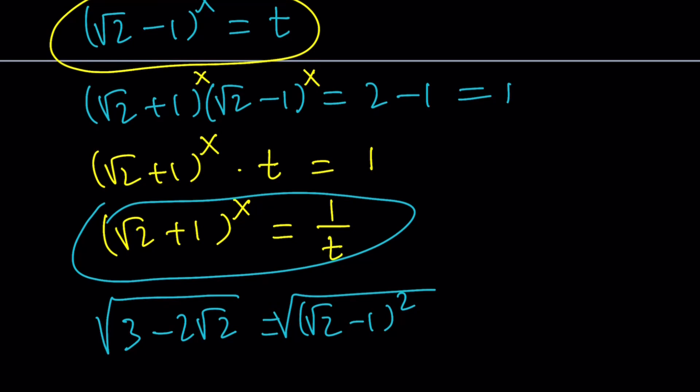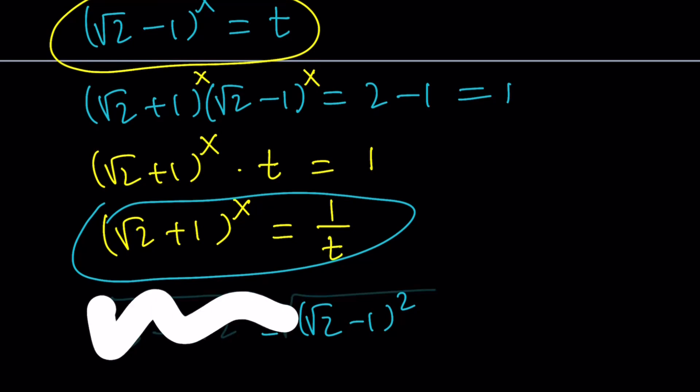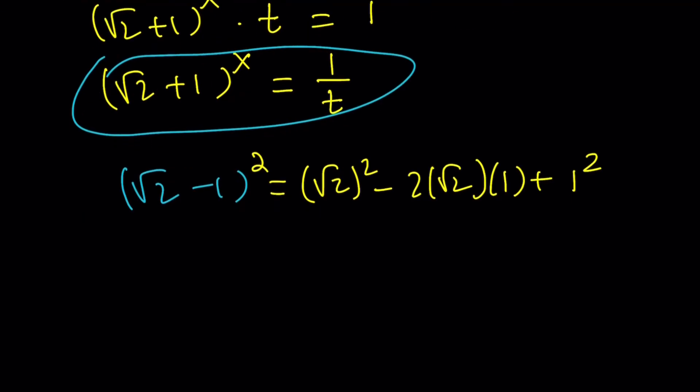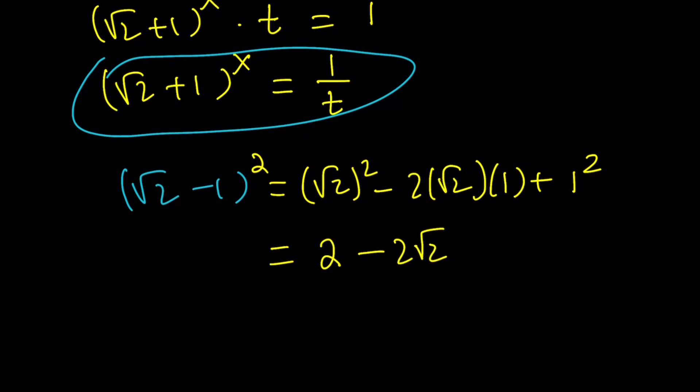Does that make sense? Or to keep a long story short, if you square √2-1, you get (√2)²-2(√2)(1)+(1)². √2 squared is 2, this is 2√2, and 1 squared is 1, and this becomes 3-2√2. So 3-2√2 is (√2-1)².